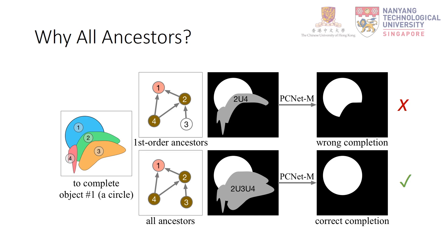In amodal completion, we need to use all ancestors in the graph as the occluders. For example, for object 1, all ancestors include objects 2, 3, and 4. But why not just use first-order ancestors, since high-order ancestors like object 3 do not directly occlude object 1? If we only use first-order ancestors — objects 2 and 4 — the completion is limited to the union of their modal masks, the gray region. However, higher-order ancestors might also occupy the invisible region of the target object; part of object 1 may be indirectly occluded by object 3. Using only first-order ancestors results in incomplete amodal completion. When we use all ancestors — objects 2, 3, and 4 — we obtain correct amodal completion.